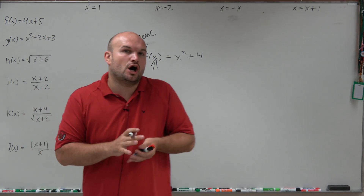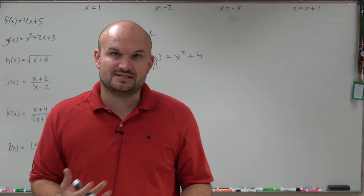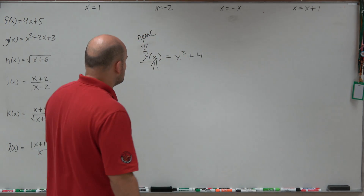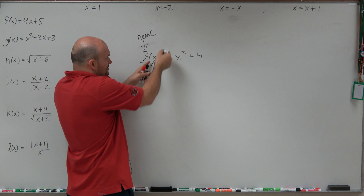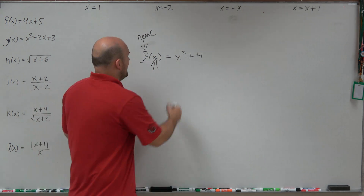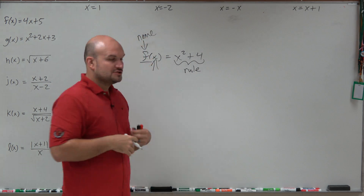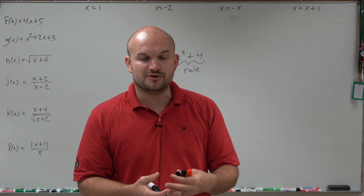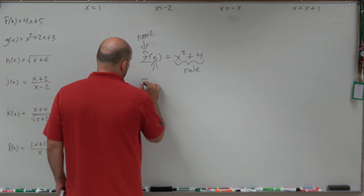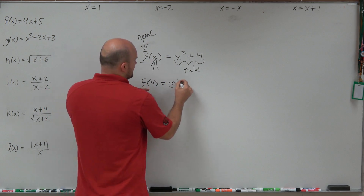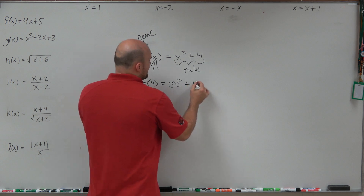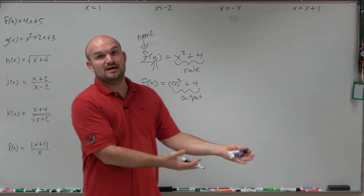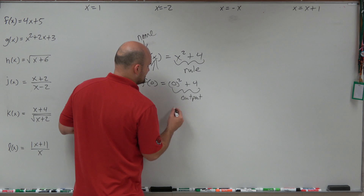What's inside the parentheses is what we call our input variable. The main characteristic of a function is you're going to have an input and an output, and for every input you're going to have a unique output. The name tells you what you're plugging into your function, and this is going to be your rule. If we're looking to evaluate for a different value, we replace whatever value is for our input — it pulls that value in, and then we get the output, which in this case would be equal to 4.